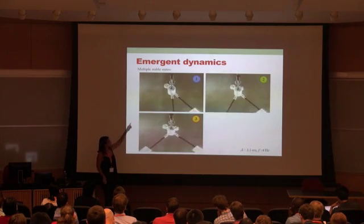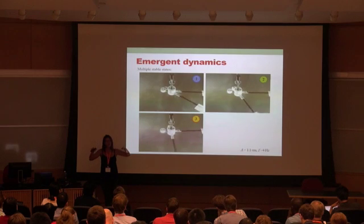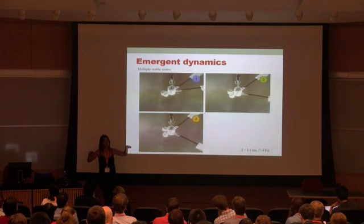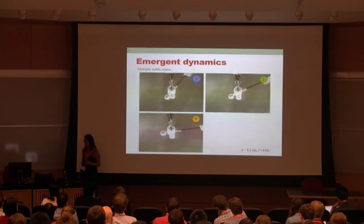And also, what you see here is that for the same driving motion, you have multiple stable configurations. So the idea next was, how do we understand that?